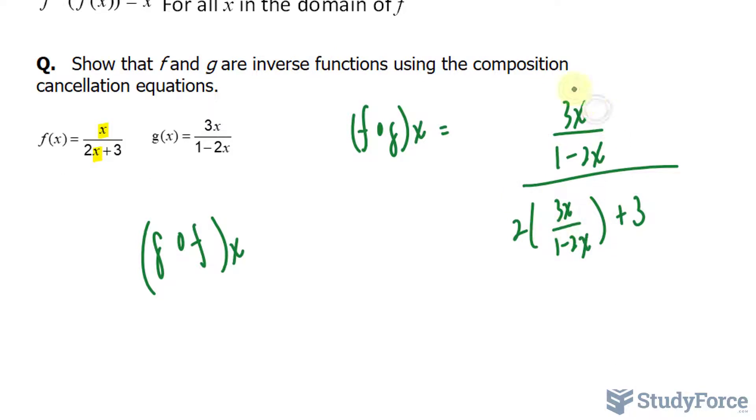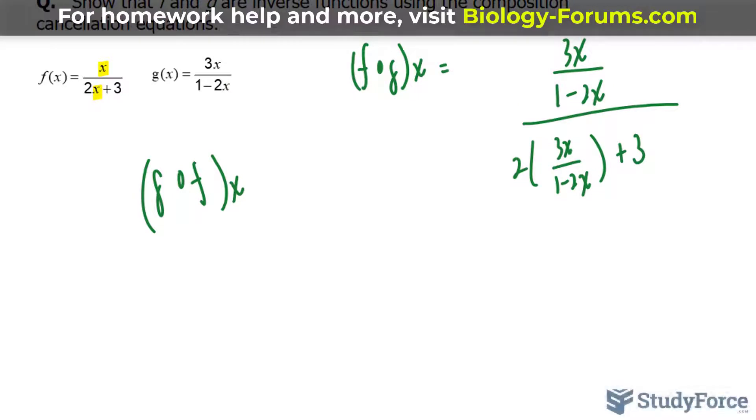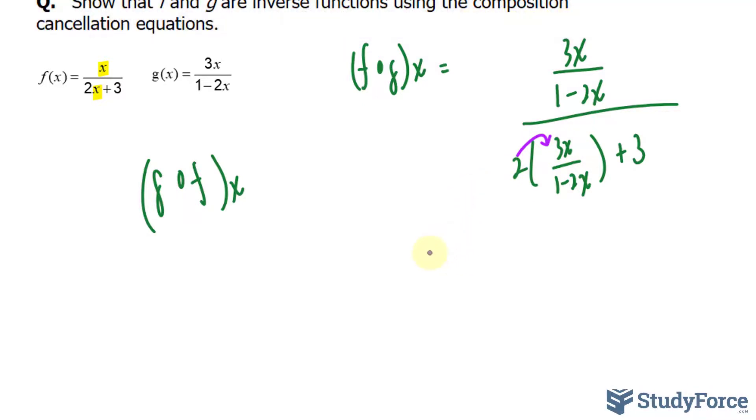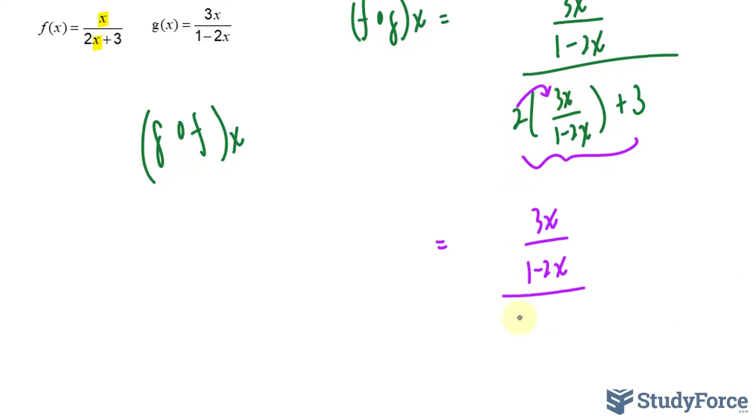This right here is a complex fraction, a fraction within a fraction technically. So it's going to take some time to reduce this as much as possible. First, I'll multiply this 2 into this factor. And then I will combine these two terms. So the numerator hasn't changed. Let me rewrite that. And multiplying this 2 into 3x, we get 6x over 1 minus 2x plus 3.